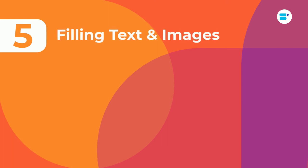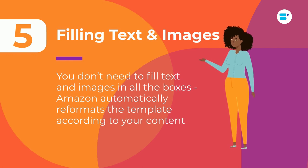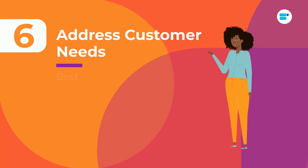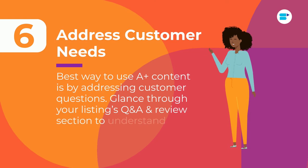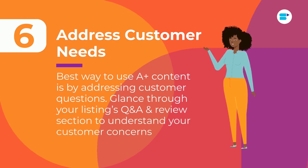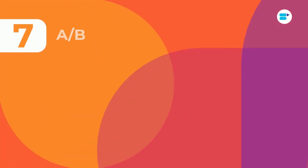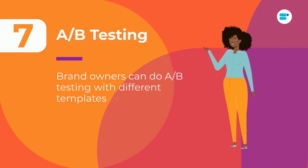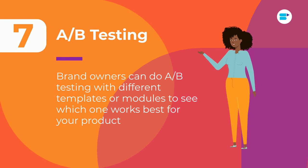Number five: you don't need to fill text and images in all the boxes — Amazon automatically reformats the template according to your content. Number six, and this is a crucial one: address your customer needs. The best way to use A-plus content on Amazon is by addressing the most common customer questions. Glance through your Amazon Q&A section and review sections to understand your customer queries and concerns. Number seven: brand owners can do A/B testing with different templates or modules to see which one works best for their product in terms of sales and conversions.